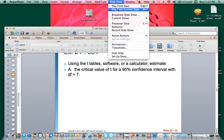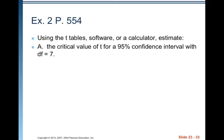Welcome back. This is chapter 23, video number 2. We're going to do exercise T from page 554. We're going to use the T-table software or calculator to estimate several things. The first one is the critical value of T for a 95% confidence interval with degrees of freedom equal to 7.